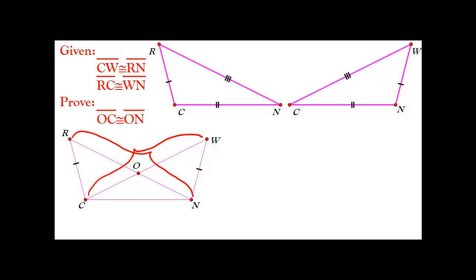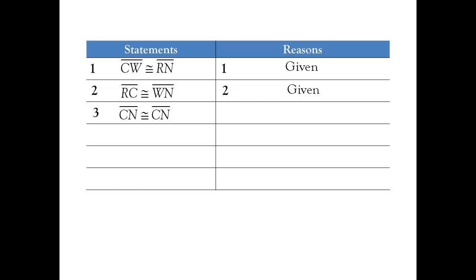Now, some of you may have noticed that I put tick marks in my drawing for CN and CN. The reason is because both of those segments are actually the same segment. So therefore, CN is congruent to CN, and the reason for that is the reflexive property. Therefore, triangle RCN is congruent to triangle WNC, and the reason is side, side, side.